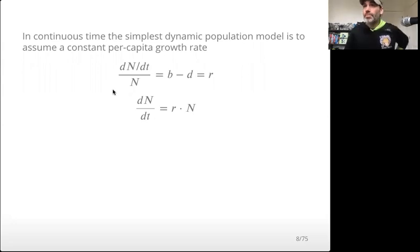The simplest possible dynamic population model would be to assume that the per capita growth rate is constant. If we say change in population size is births minus deaths, b minus d, and if both of those things are constant, we're going to combine b minus d into one overall parameter r, which is our net population growth rate.